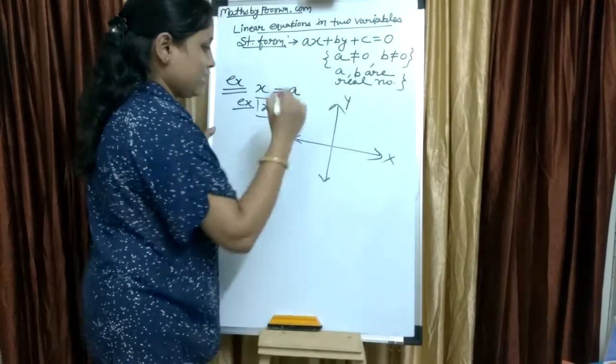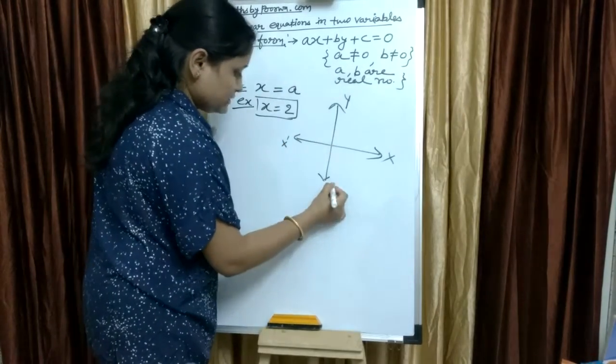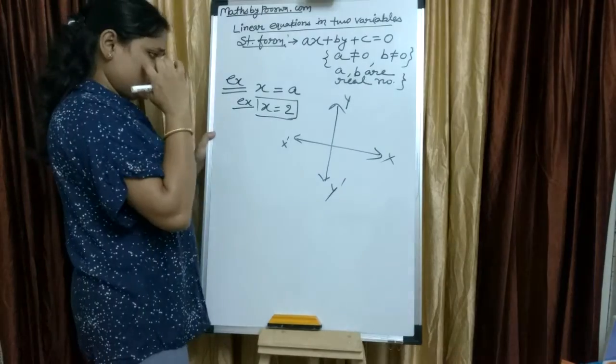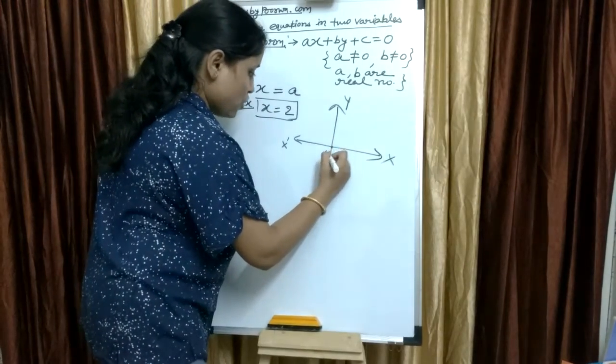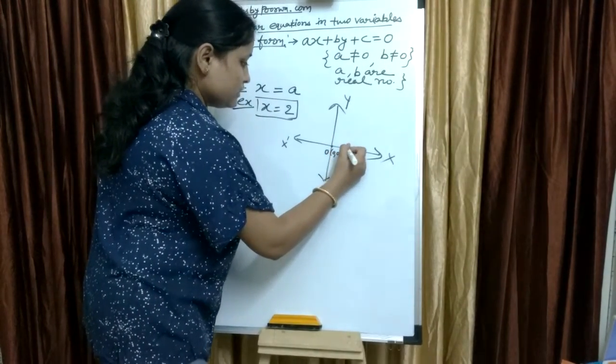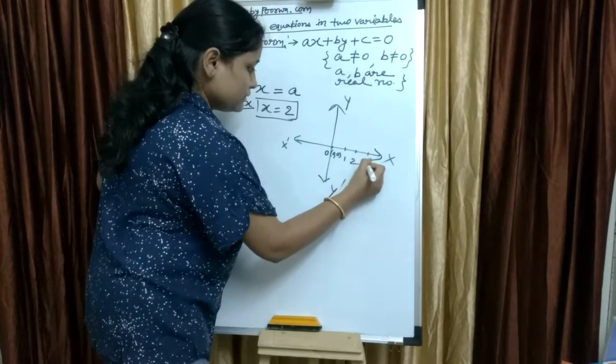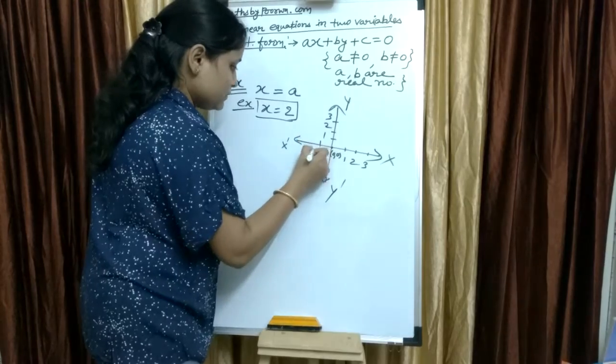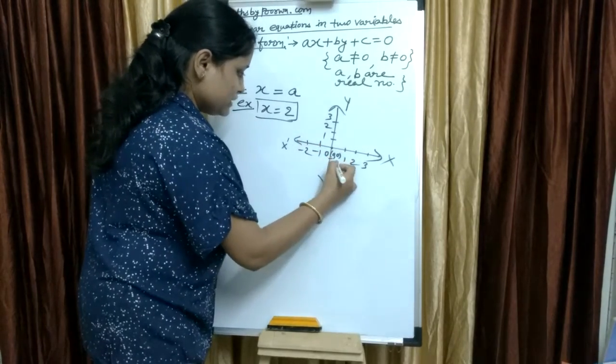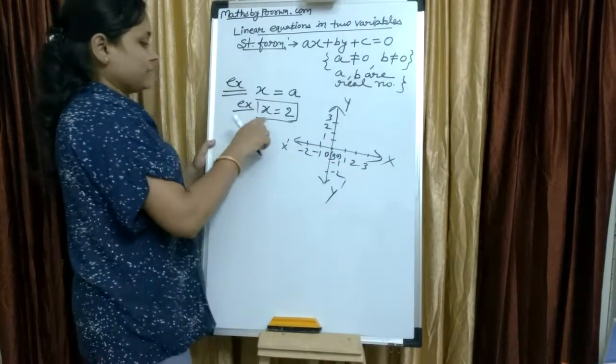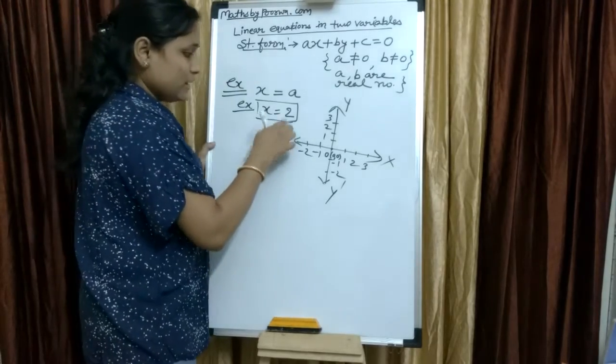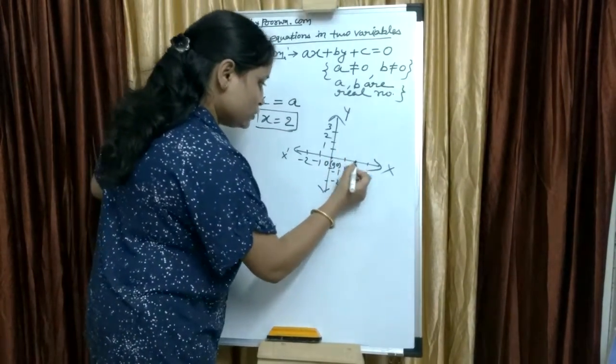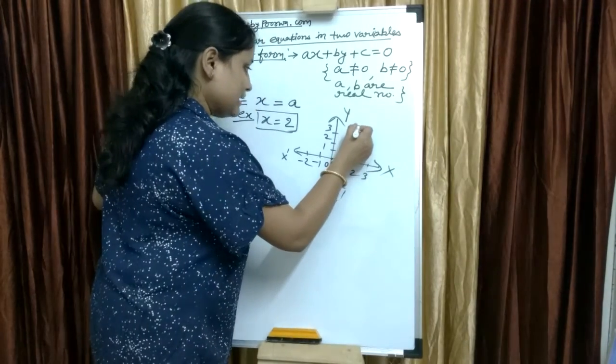This is x axis, this is y. This is x dash, this is y dash. Positive, negative. This is origin 0, 0, then 1, 2, 3. And this is 1, 2, 3. Minus 1, minus 2. Minus 1, minus 2. x equals to 2 means this.